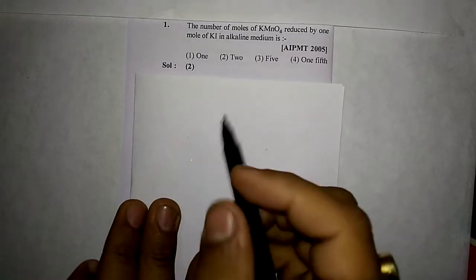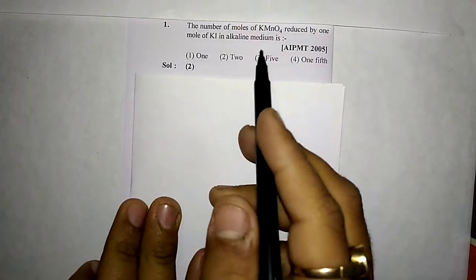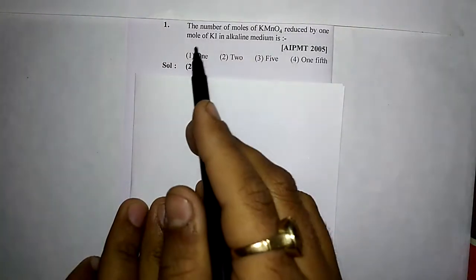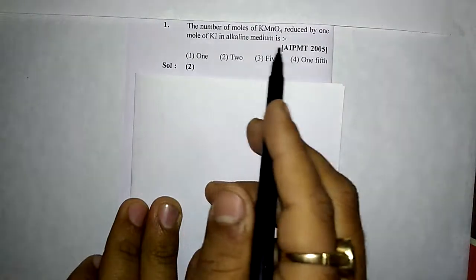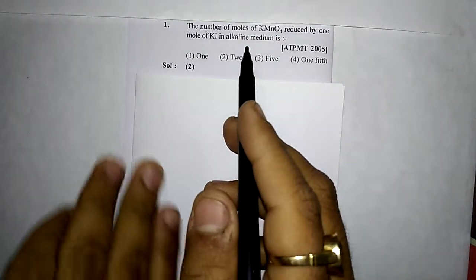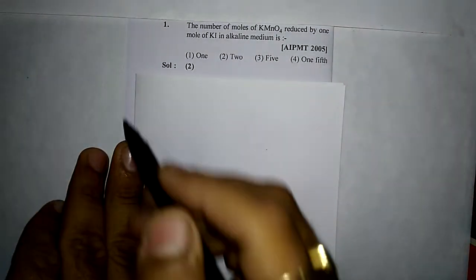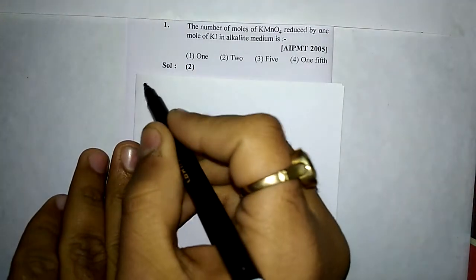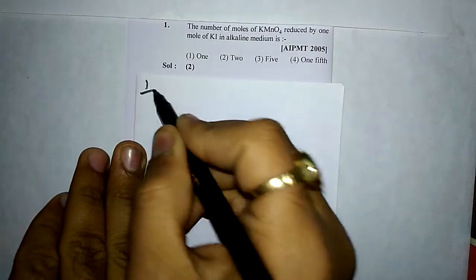Here we ask: what is the number of moles of KMnO₄ reduced by one mole of KI in an alkaline medium? We will write the general reaction and see.